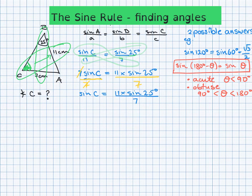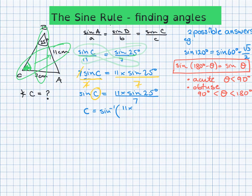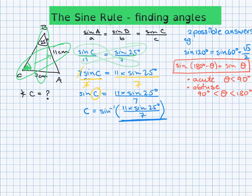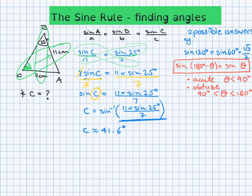To find the angle, we apply inverse sine: angle C equals sine inverse of (11 × sine 25° / 7). I like to keep the fraction as it is without rounding before the final step, because this gives the most exact value. Using a calculator, this gives approximately 41.6°.